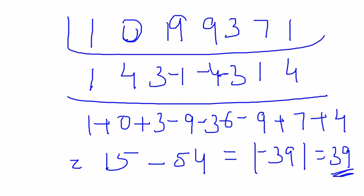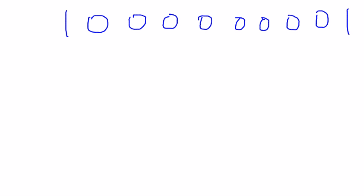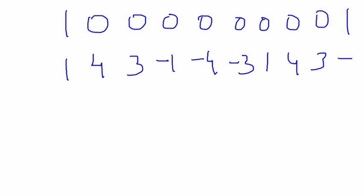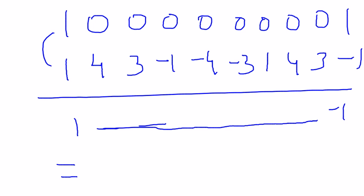Let's take one final example. The number is 1000000001. Writing out the pattern: 1, 4, 3, minus 1, minus 4, minus 3, 1, 4, 3, minus 1. Evaluating: 1 cross 1 is 1, then all the middle digits are zero, and the last minus 1 cross 1 gives minus 1. So evaluating gives 1 minus 1 equals 0, which concludes that 1000000001 is perfectly divisible by 13.